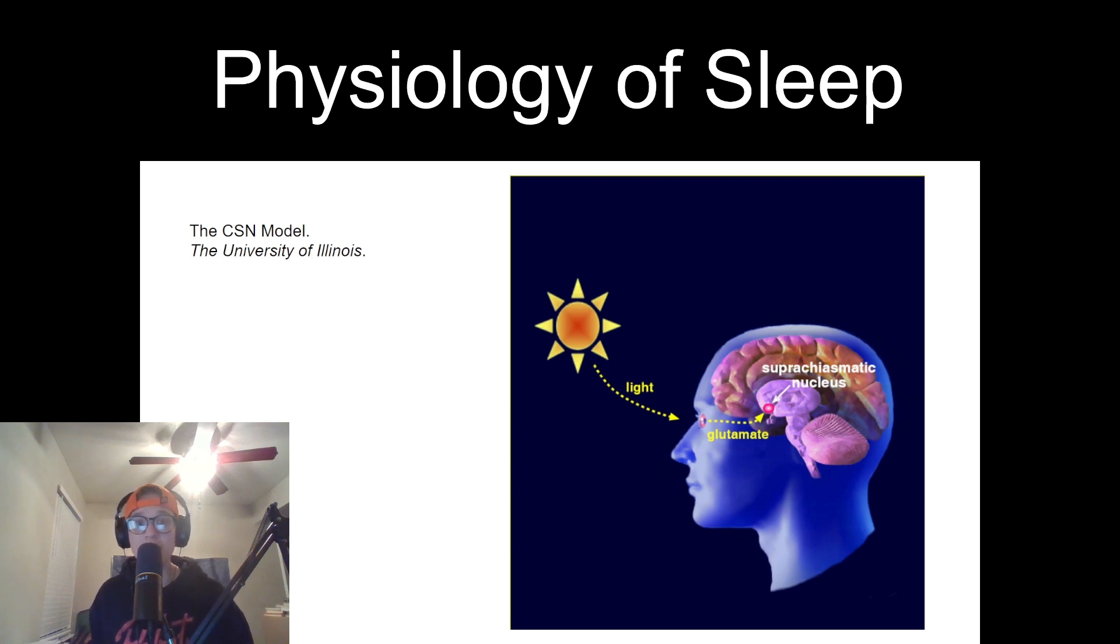This hormone helps facilitate the transition from wakefulness to drowsiness, promoting the onset of sleep. As we progress through the sleep stages, the brain exhibits distinct patterns of electrical activity. Electroencephalography, or EEG, provides a window into these changes, revealing the different stages of sleep.